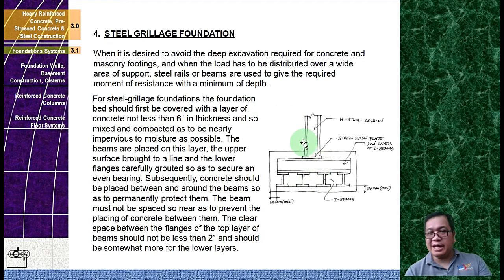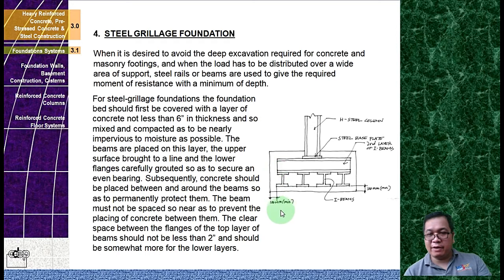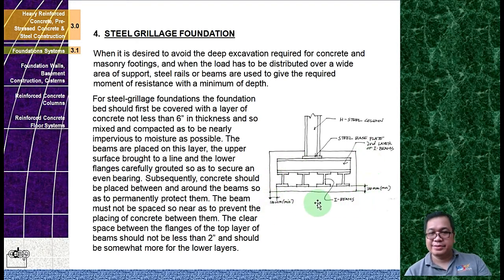For example, in this illustration you have the H steel column, then you have a steel base, then your I-beams. There is a minimum depth of around 100 millimeters at the top and also a minimum of 100 millimeters at the bottom.